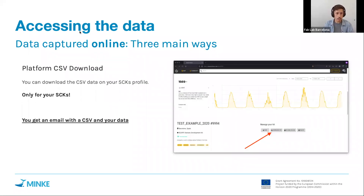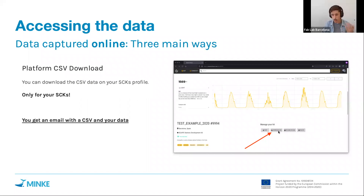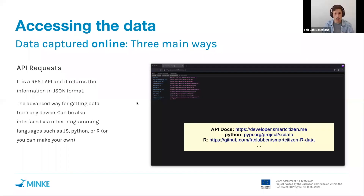If you want to download data from the platform you can do so from your kit using the download CSV button, and you will get an email with the data after a few minutes. This is only available for your own kits.